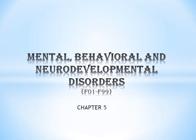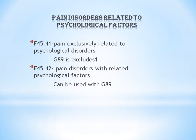Each chapter's code range — the F series — is F01 to F99. The first topic is pain disorders related to psychological factors. Two codes are described: F45.41 and F45.42.